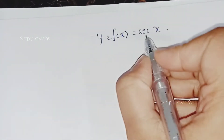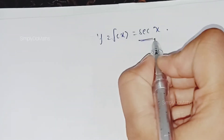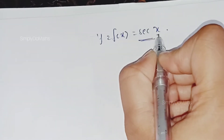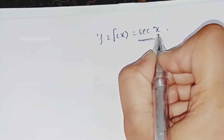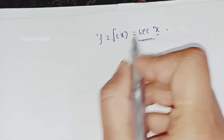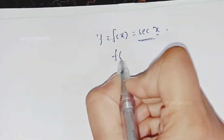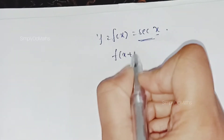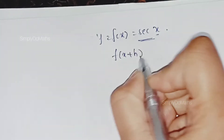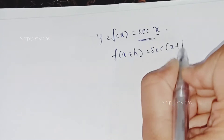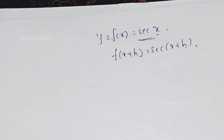We need to differentiate secant x with respect to x. Here f of x equals secant x, then f of x plus h will be equal to secant of x plus h.